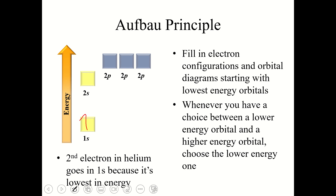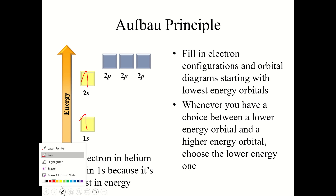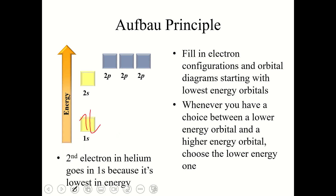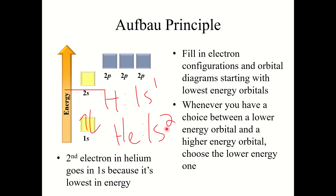When we go to helium — second in the periodic table — it has all the electrons from the elements before it plus one more, so helium has two electrons. We add the second electron to the same 1s orbital following the Aufbau principle. That's why helium's electron configuration is 1s2 — two electrons in the 1s subshell. Always put the electron in the lower energy orbital when you have a choice.